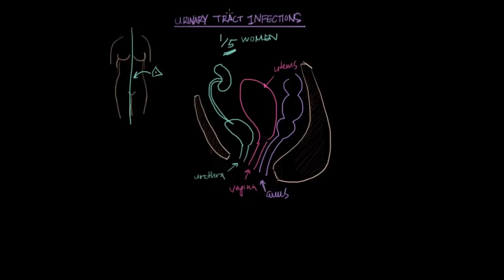So back to urinary tract infection. The term urinary tract really implies anything from the kidney down to the urethra. But to be a little bit more specific, infection of the urethra, or this part right here, this part that I'm coloring in a different color, is called urethritis.